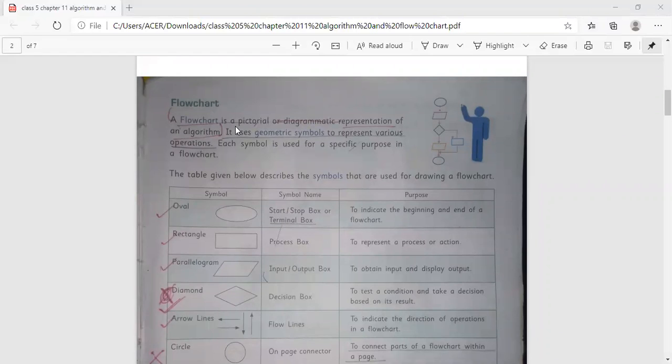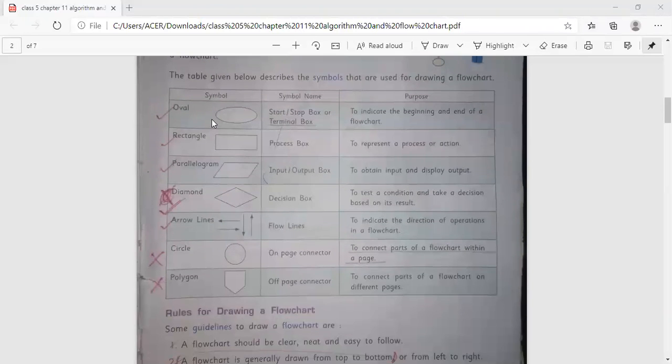Flowchart. A flowchart is a pictorial or diagrammatic representation of an algorithm. It uses geometric symbols to represent various operations. Each symbol is used for a specific purpose in a chart. Here you can see a table given below with the symbol name and the purpose. The first is your oval, that is start and stop box or terminal box. The purpose is to indicate the beginning and end of a flowchart.